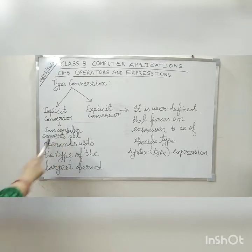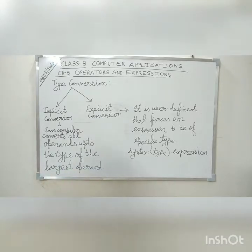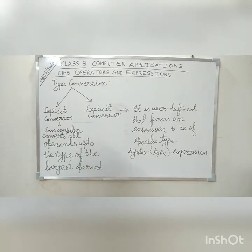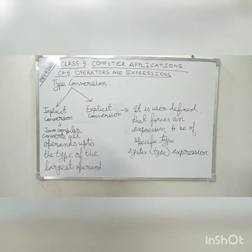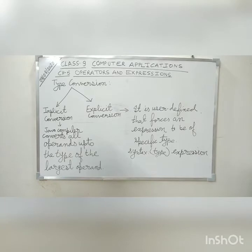In implicit conversion, the Java compiler converts all operands up to the type of the largest operand. Meaning, whichever variable or constant in your expression is of the largest data type, the output will come in that data type. If any variable is of double type, it will convert to double first. If none is double, then float; if not float, then long; and then integer. There is no need for the programmer to take any action — it is automatically done by the Java compiler.